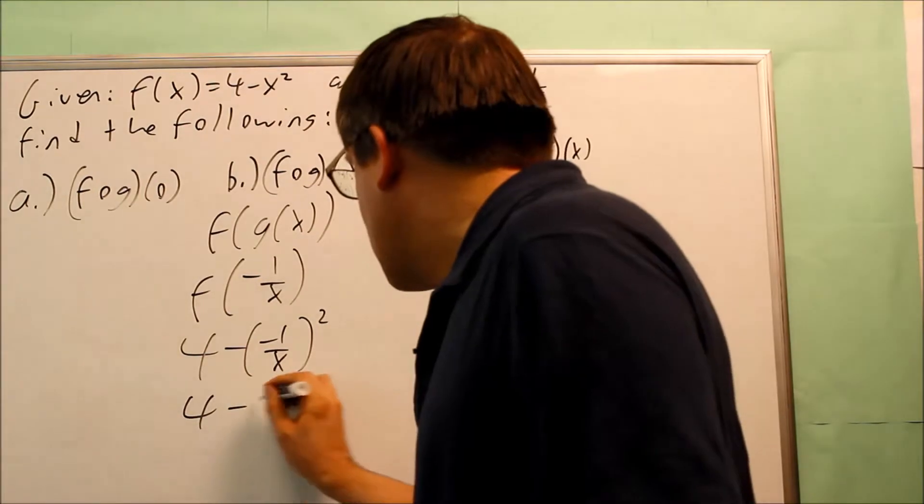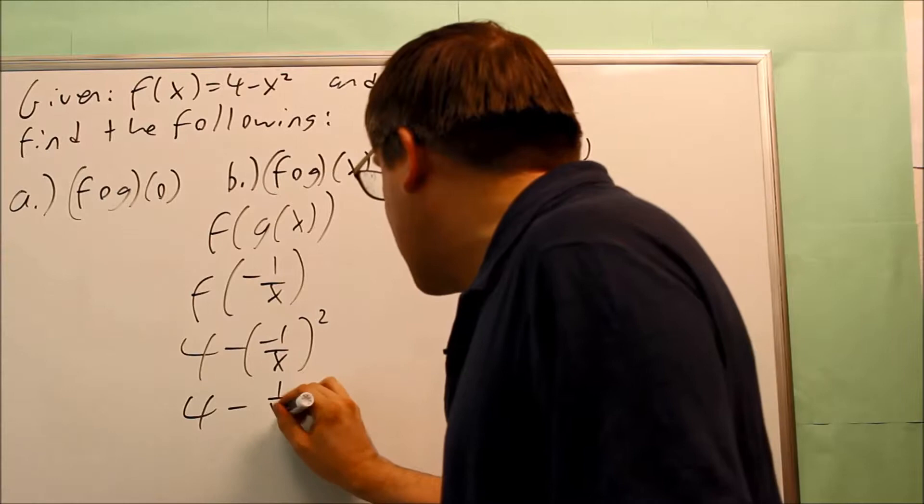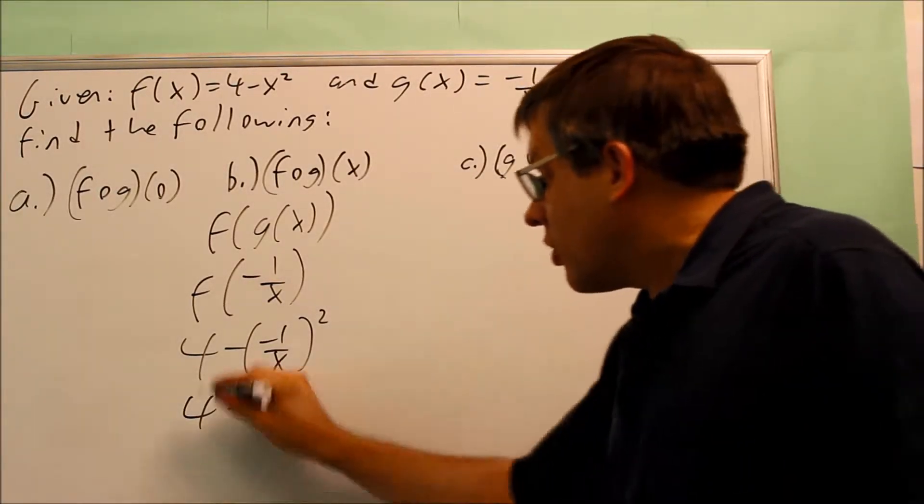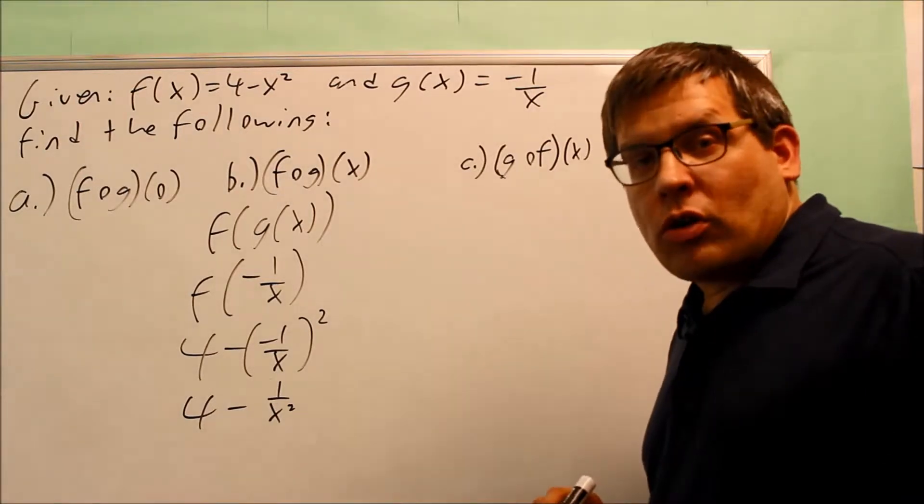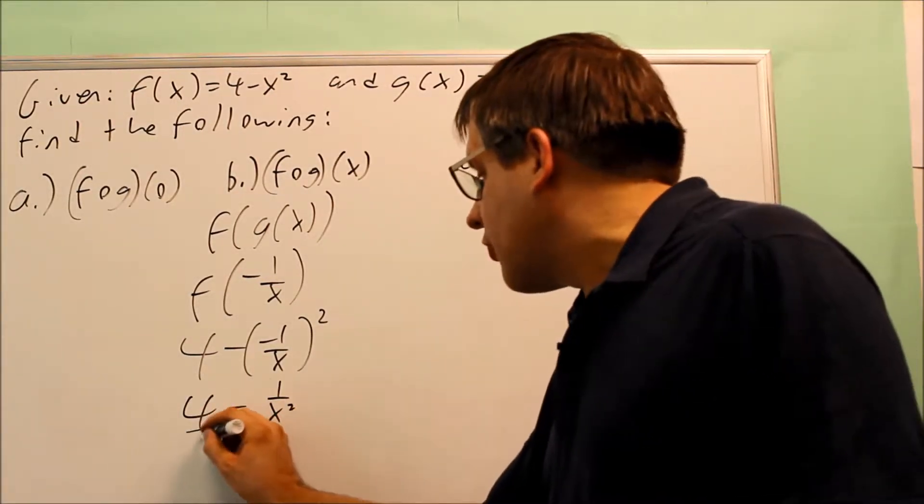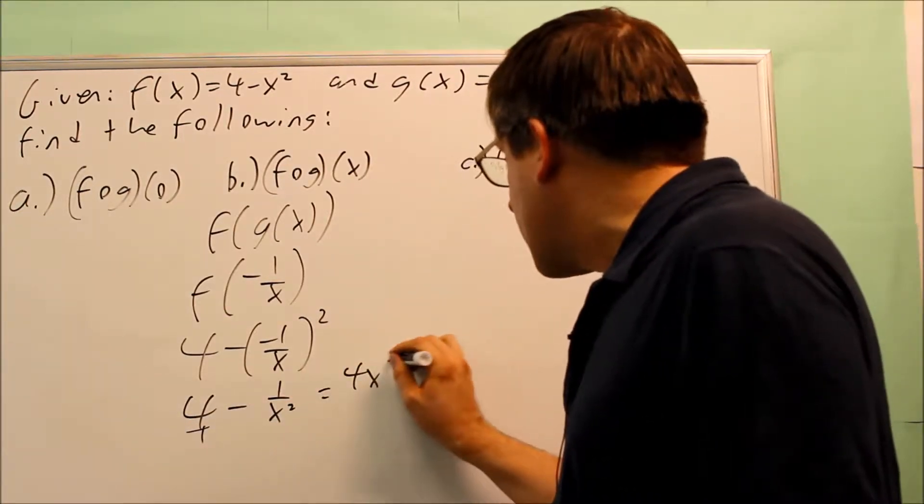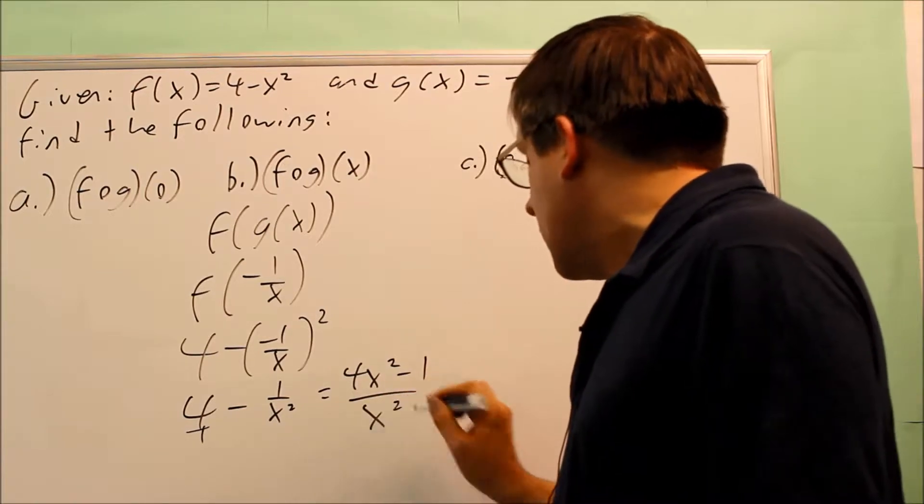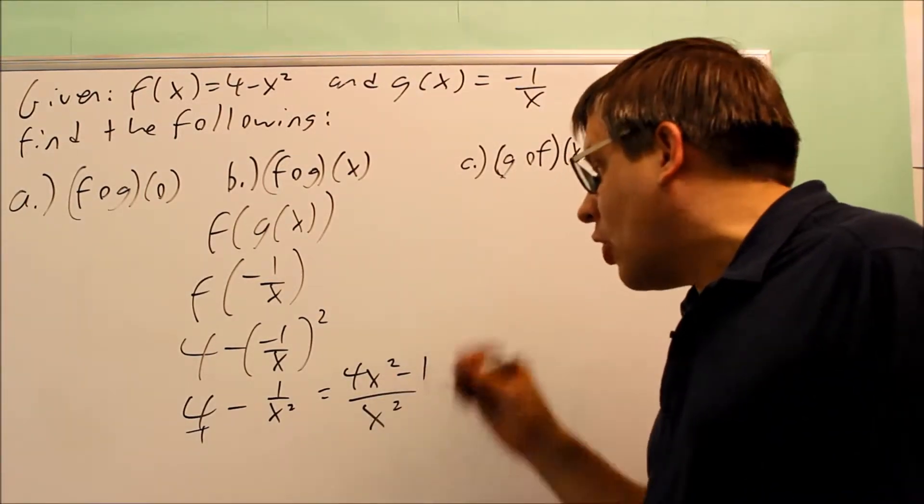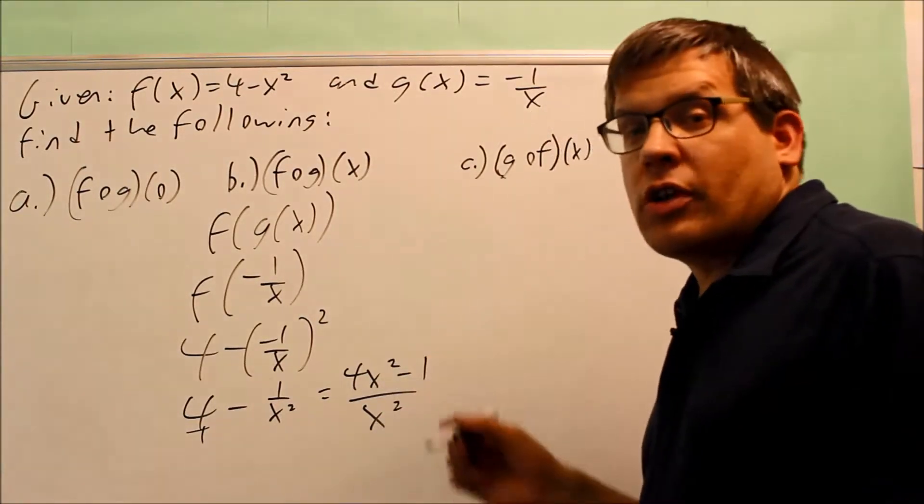So then, I can square the top and bottom, and then when I do that, I get this. I get 4 minus 1 over x squared. Now, you can either leave your answer as that, or if you want to get common denominators, you can. If you make this 4 over 1 and multiply top and bottom by x squared over x squared, then you're going to get 4x squared minus 1 over x squared. And then there's nothing more you could do with that. You could factor the top, only if it asks you to do so. Otherwise, you can leave your answer in that form.